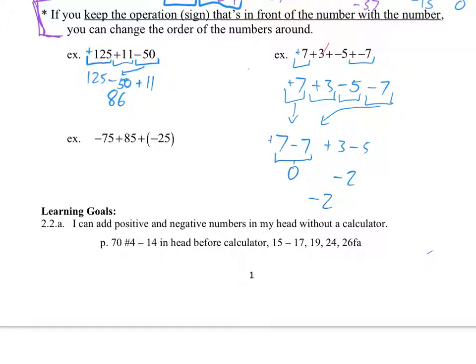But you don't have to do it this way. If you're much more of a, that's dumb. 7 plus 3 is 10, minus 5, minus 7, negative 2. I mean, that's totally fine.